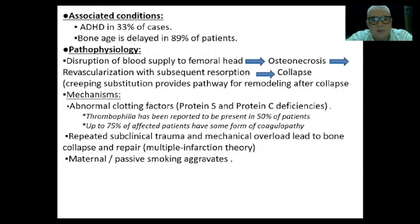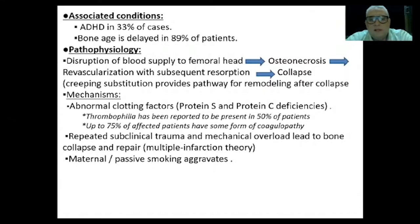Most cases show delayed bone age — 89%. The disease starts with disruption of the blood supply, after which osteonecrosis sets in. Then revascularization occurs by creeping substitution, with resorption of the dead bone and introduction of new osteoblasts to start forming bone. This causes structural weakness of the osteonecrotic bone, leading to the characteristic collapse.